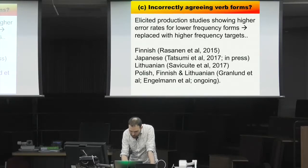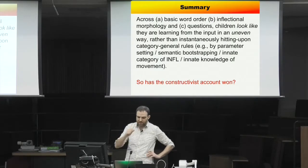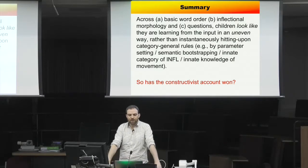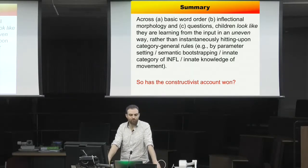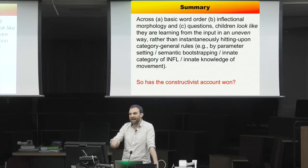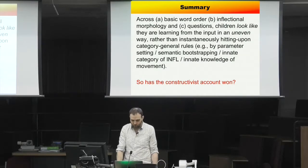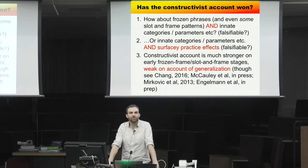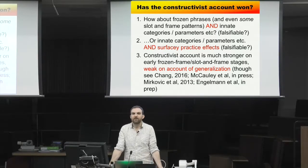In summary for basic word order and inflection and morphology: children look like they're learning from the input in an uneven way, rather than instantaneously hitting upon category-general rules as would be predicted by parameter-setting accounts, semantic bootstrapping, innate inflection categories, or innate movement rules. Does this mean the constructivist account has won? Not so fast — there are several possibilities to consider.